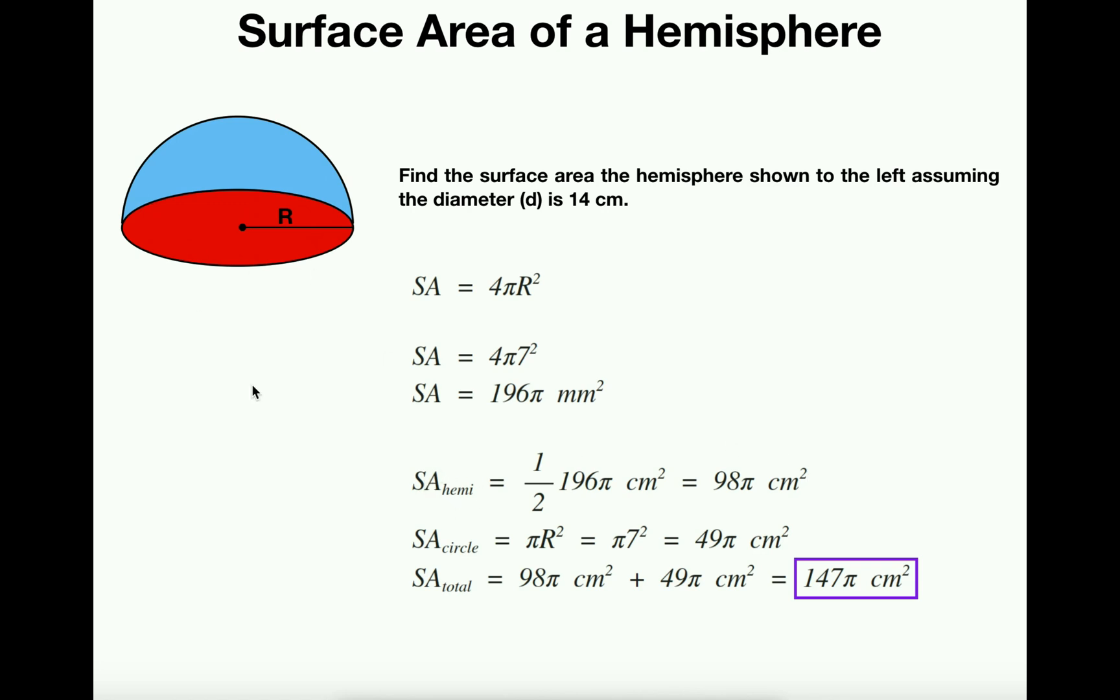But we, however, by cutting the sphere in half, we now have a bottom circle here that we need to account for in red. It's a circle. The area of a circle is simply πr². And so our radius is 7, same radius as before. So it's π times 7². So that is 49π cm².